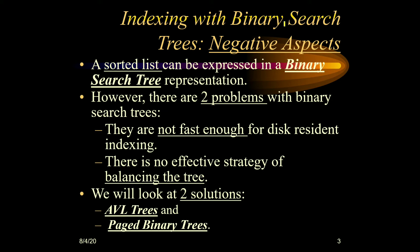The technique used here is indexing with binary search trees. First, let's see the negative points of a binary search tree. In a binary search tree, which we have already studied, we usually create a binary search tree from a sorted list. The two main problems with a binary search tree are: it is not very fast, and it requires more number of seeks to access the data. Also, the strategy required to balance the tree in the case of a binary search tree is not very effective.